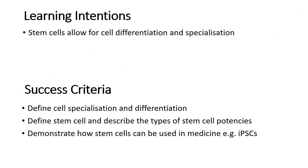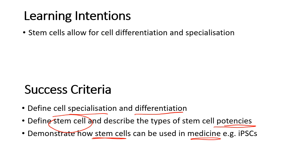Going back to the learning intentions: you should be able to define cell specialization and differentiation, define stem cell and describe the different types of cell potencies, and demonstrate how we can use stem cells in medicine through all the therapies discussed. Bring any questions to class and make a note of things you want to ask more about.